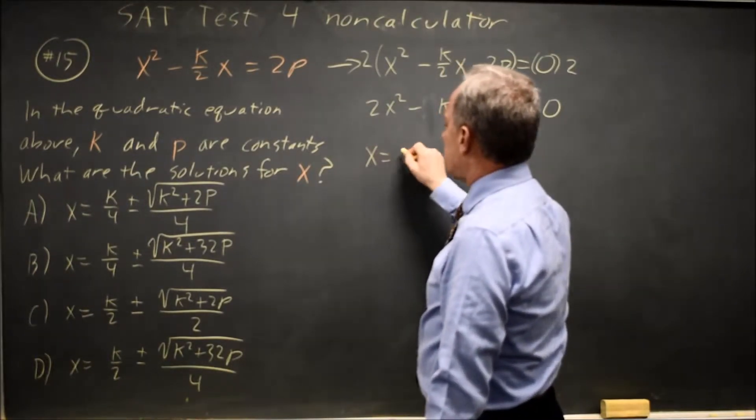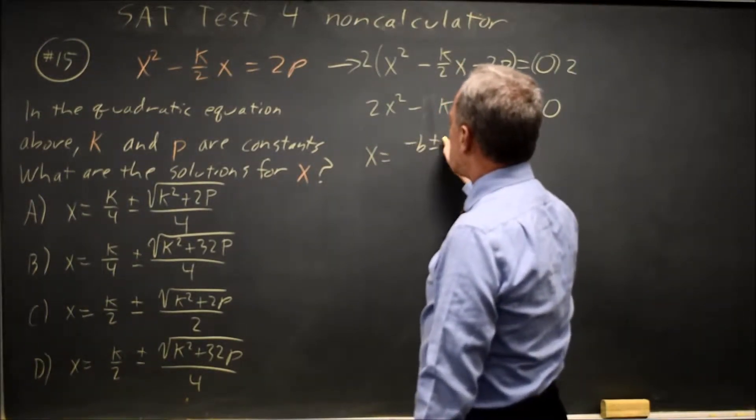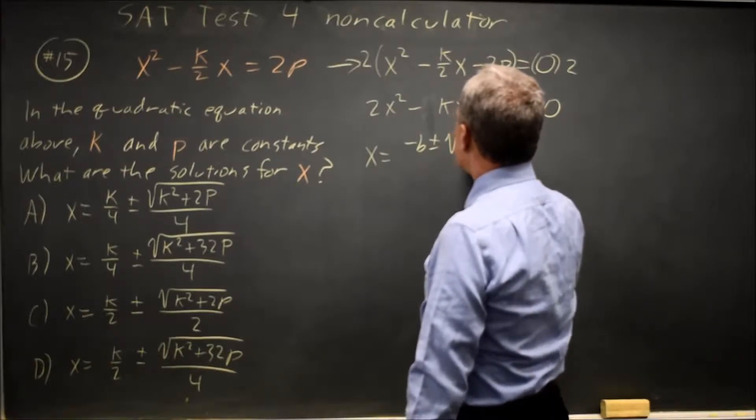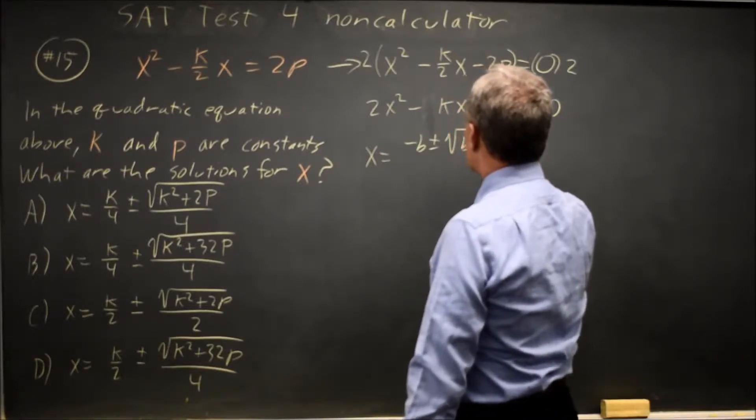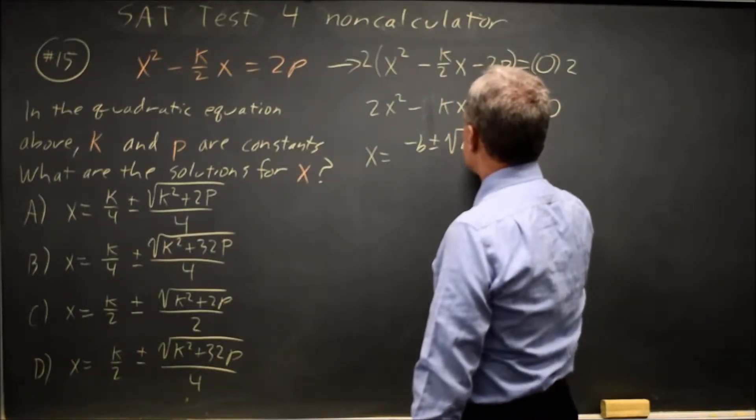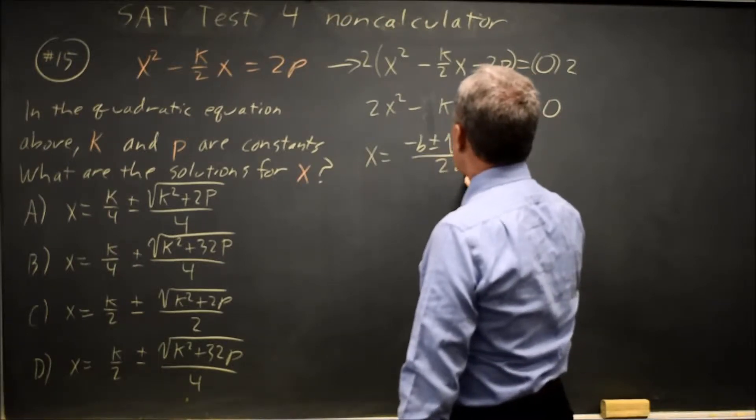The quadratic formula says x equals negative b plus or minus square root b squared minus 4ac all over 2a.